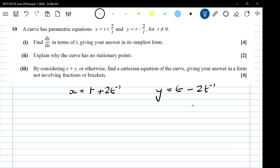That's an important first step. So dx by dt is 1 minus 2t to the minus 2, and dy by dt is 1 plus 2t to the minus 2.